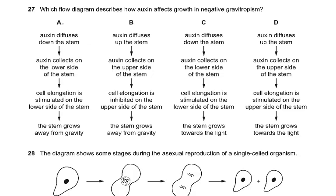Question number 27: Which flow diagram describes how auxin affects growth in negative gravitropism? Auxin diffuses down the stem, auxin collects on the lower side of the stem, cell elongation is stimulated on the lower side of the stem, and the stem grows away from gravity. So negative gravitropism has to be away from gravity.